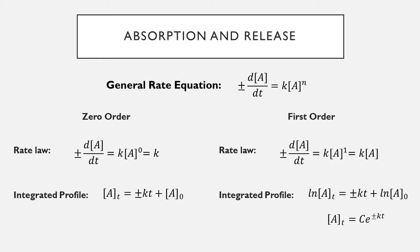A very common example of zero-order elimination is alcohol leaving the body. The rate at which alcohol leaves is constant no matter how many drinks you have. The common rule of thumb is one drink per hour for the elimination rate of alcohol, because the liver can only metabolize a small amount at a time and becomes easily saturated. Most other drug metabolism processes follow first order.